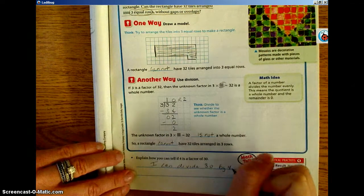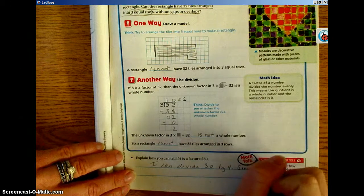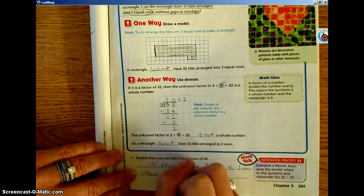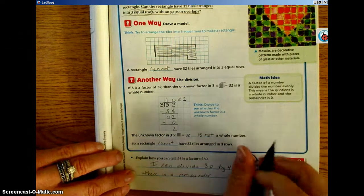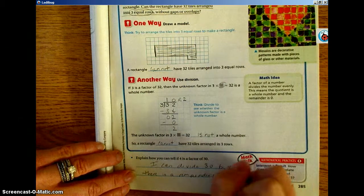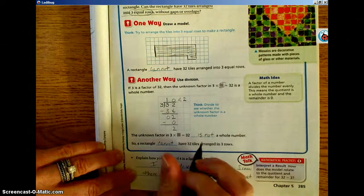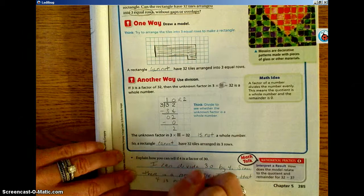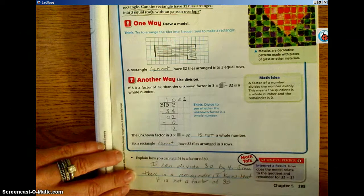Since there is a remainder, I know that 4 is not a factor of 30.